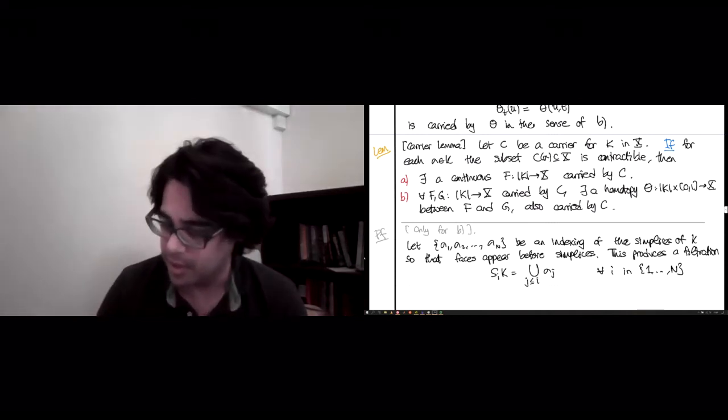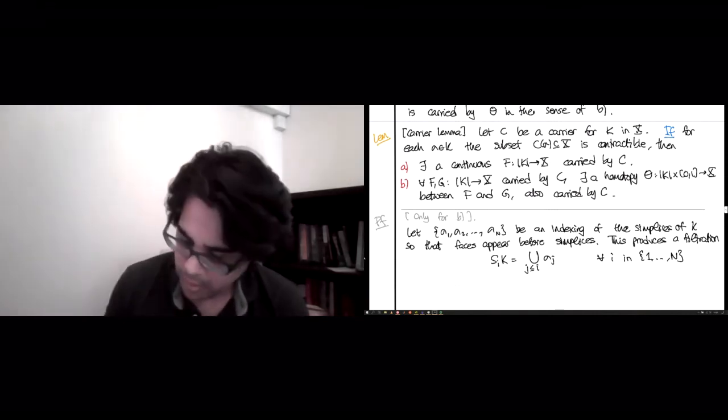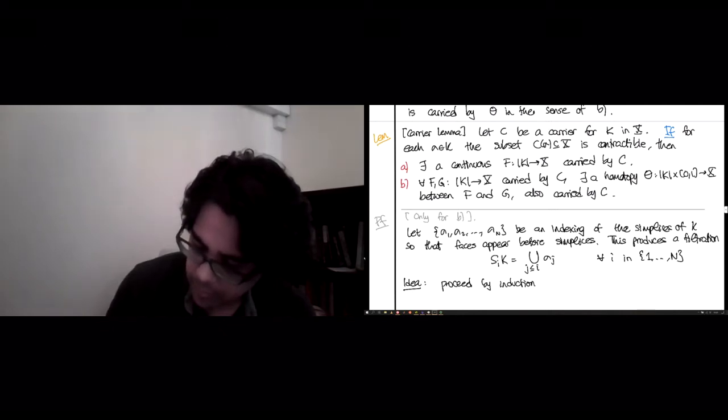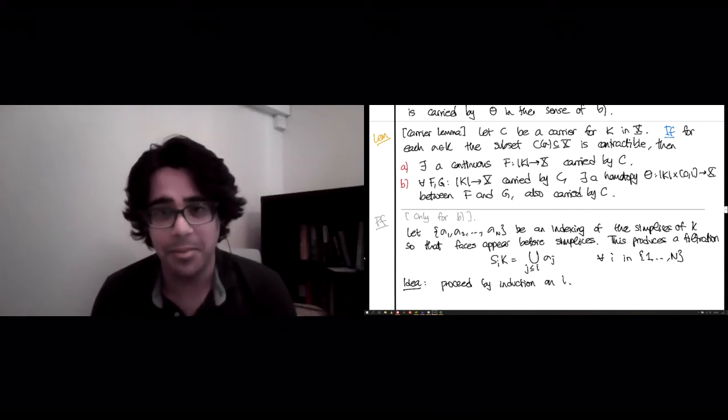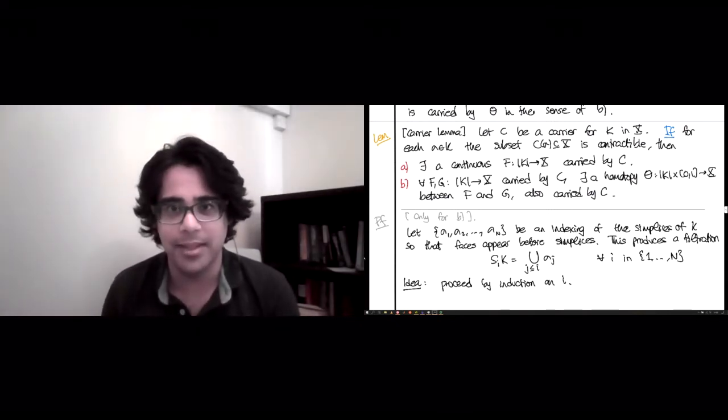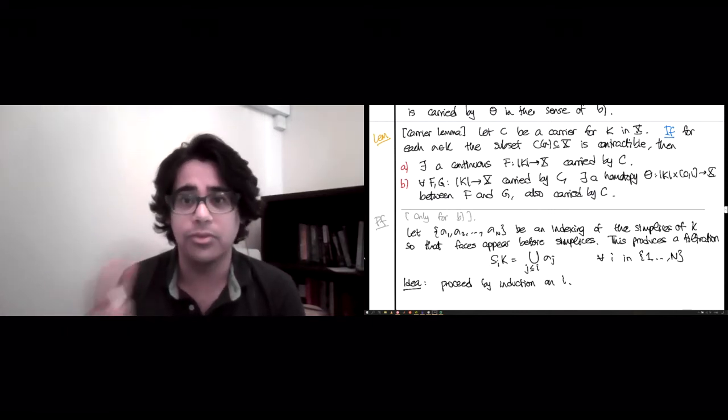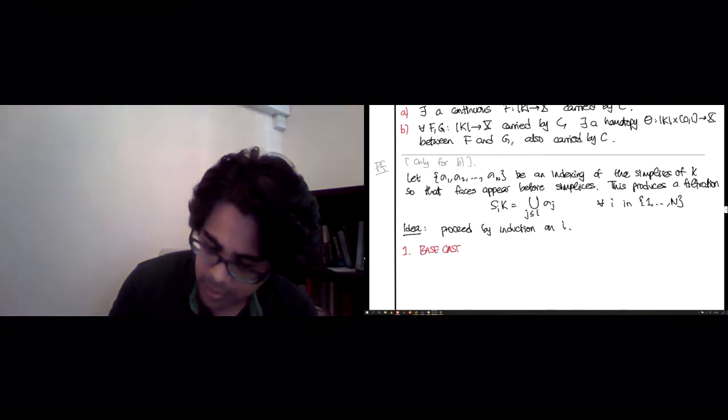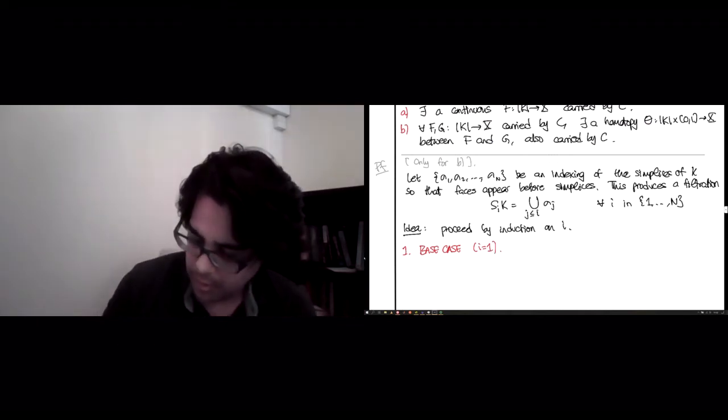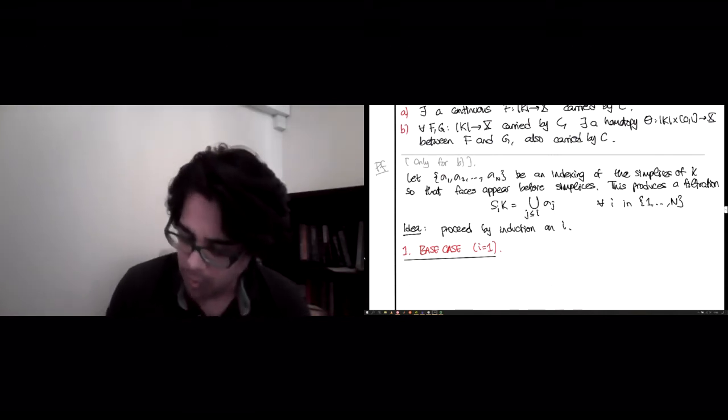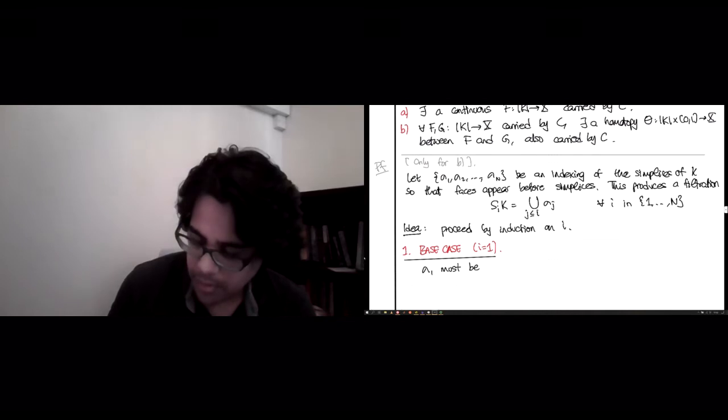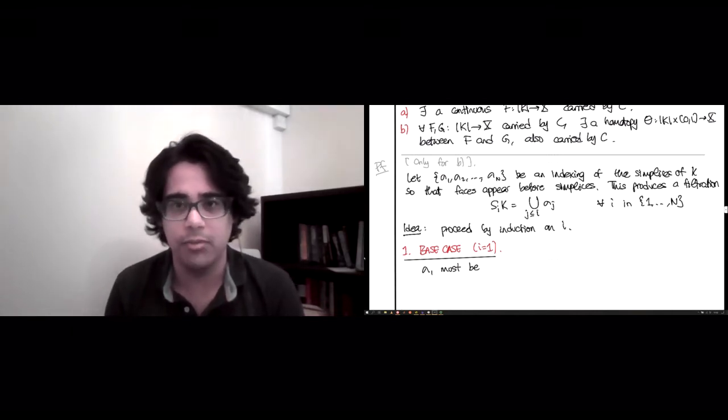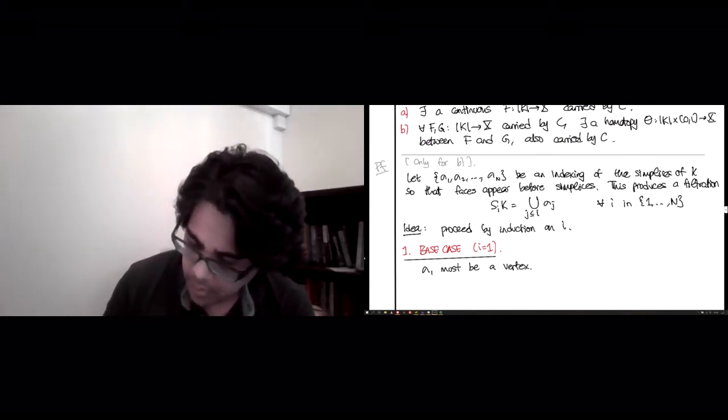So this is a nice filtration. And the basic idea of the proof is to proceed by induction on i. And I will do this. Now, induction has two steps, the base case and the inductive case. And I would like to split the inductive case into two pieces because they're involved. So there will be three parts. The base case is fairly nice. So base case, which is to say i equals 1. So let's worry about this first. So when i equals 1, sigma_1 must be, remember, all the faces of sigma_1 should have appeared before sigma_1, which is to say sigma_1 can have no faces other than itself, which means sigma_1 must be a vertex.